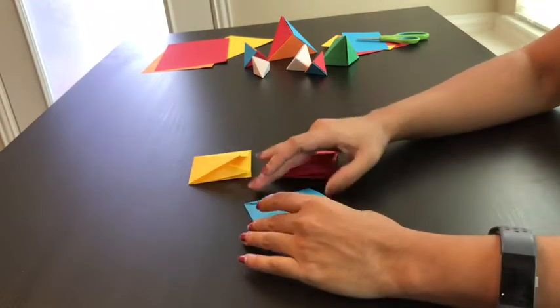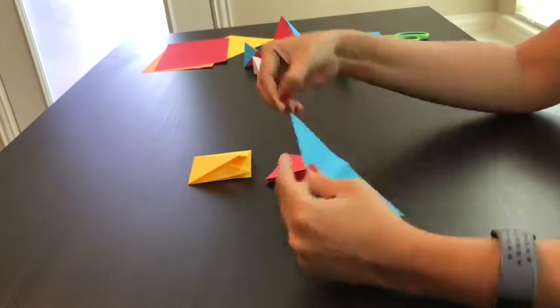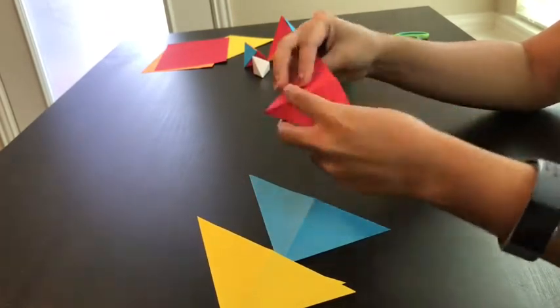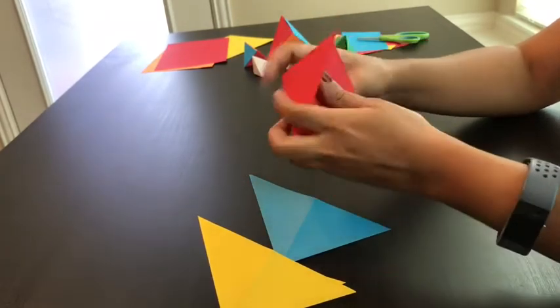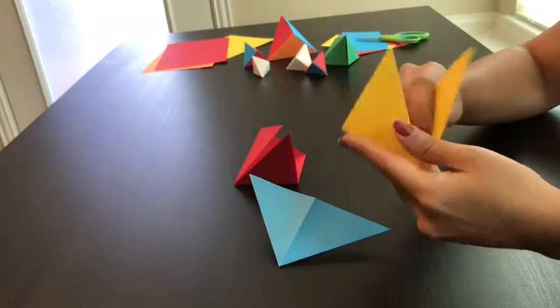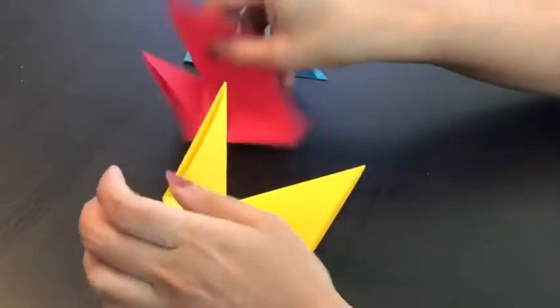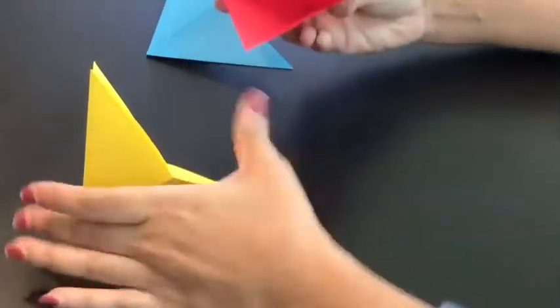Once your squares are ready, fold them like so, just to reinforce the creases. For each of your squares, there should be two sides: one side with two flaps and one side with one flap.